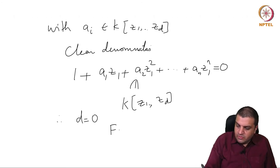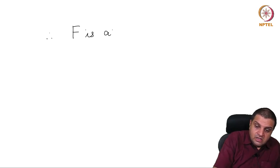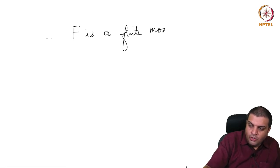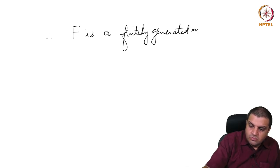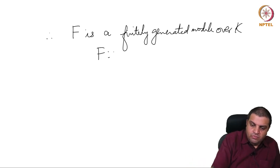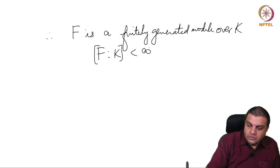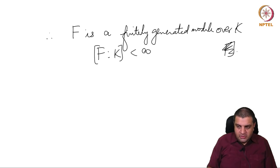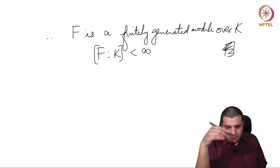Therefore, F is a finitely generated module over K, which is what we wanted to prove: it is a field extension whose extension degree is finite. We are now left to prove the Noether normalization lemma; we will give the proof in the next lecture.